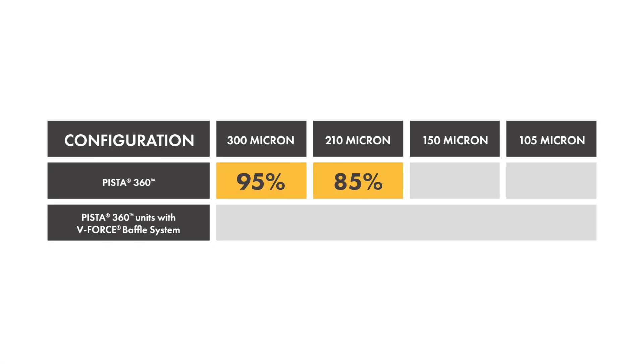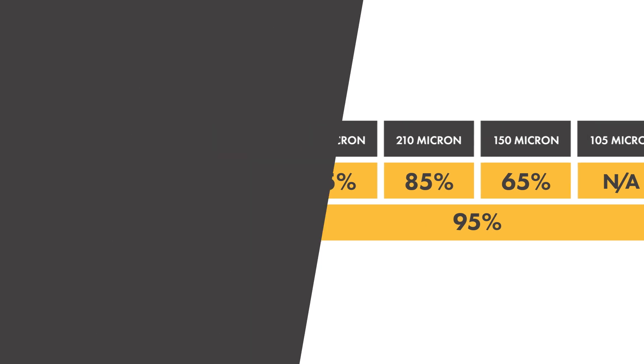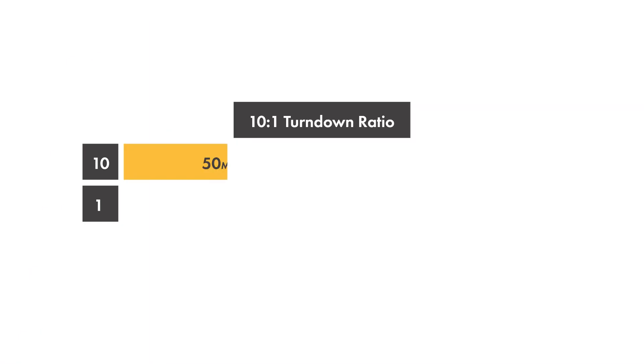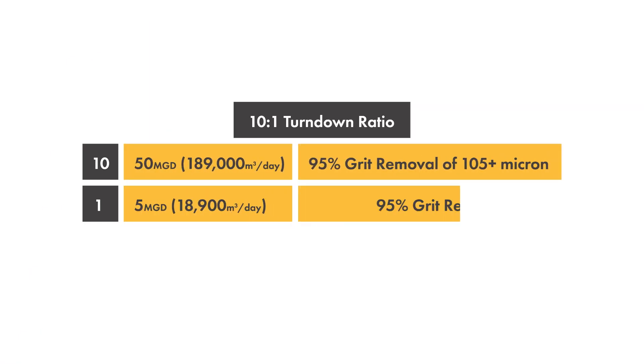The V-Force Baffle creates a forced vortex that allows 95% grit capture of 105 micron particles at all flows with its 10 to 1 turndown ratio. For example, a 10 to 1 turndown ratio on a 50 MGD unit will maintain the 95% removal rate of 105 micron and larger for flows from 5 MGD to 50 MGD.